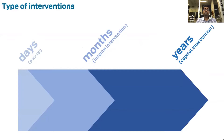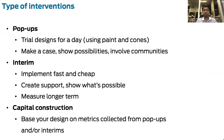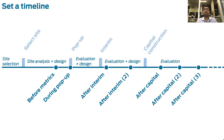Each of these metrics has to be measured at different points of time — some around a few days, some at intervals of months, and some for a couple of years. The types of interventions which define this are pop-ups, interim projects, or capital construction. While pop-ups might last for a day or two, interims can be for a couple of months or a year and help measure the long-term. It's important to create a timeline to collect these metrics at each stage of the project: before the pop-up, before the interim, after the interim transformation, and periodically after the capital construction.